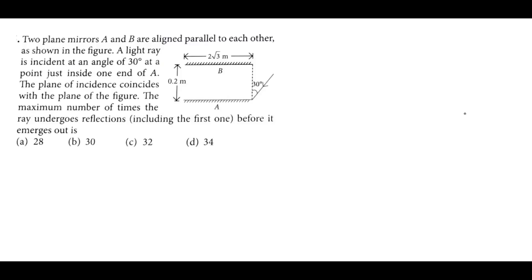A problem: two plane mirrors A and B are aligned parallel to each other as shown in the figure. A light ray is incident at an angle of 30 degrees at the point just inside one end of A. The plane of incidence coincides with the plane of the figure. Find the maximum number of times the ray undergoes reflection, including the first one, before it emerges out.